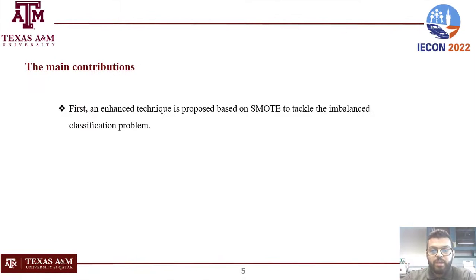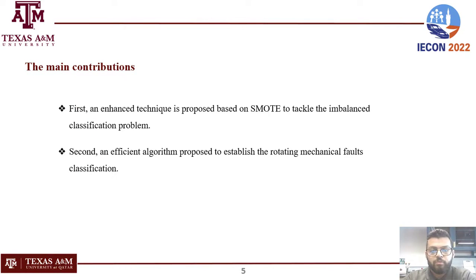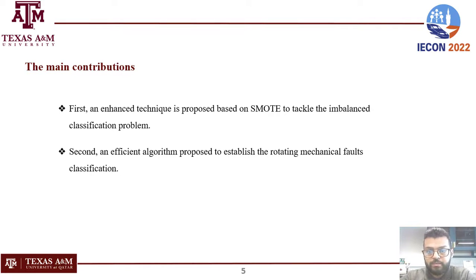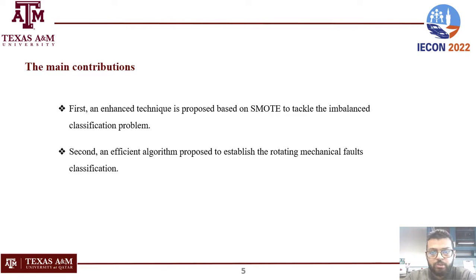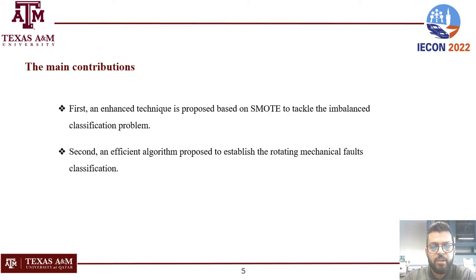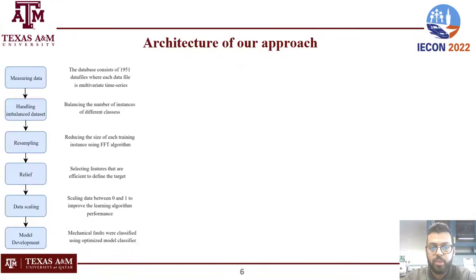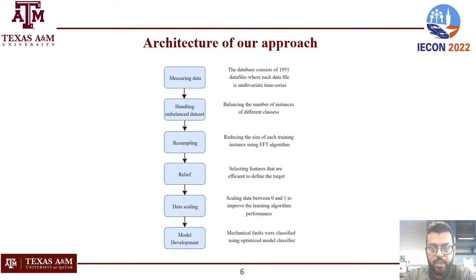Machine learning methods have been employed for fault detection, diagnosis, and fault categorization in recent years, especially for rotating assets. The main contributions of our work are as follows. First, an enhanced technique is proposed based on SMOTE to tackle the unbalanced classification problem. Second, an efficient algorithm is proposed to establish the rotating mechanical fault classification. The purpose of this work is to create an efficient classifier that can discriminate between five types of mechanical faults and the healthy case.